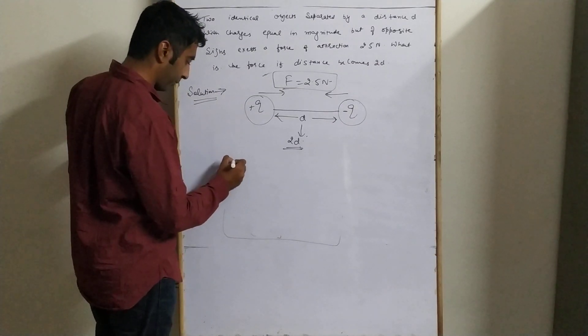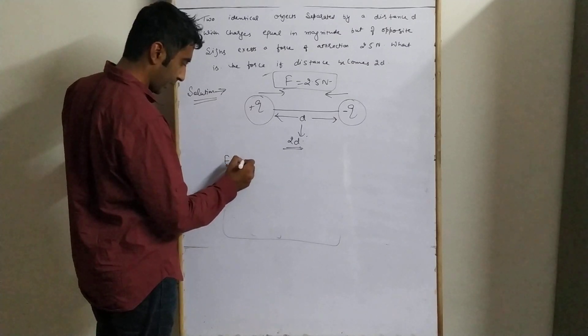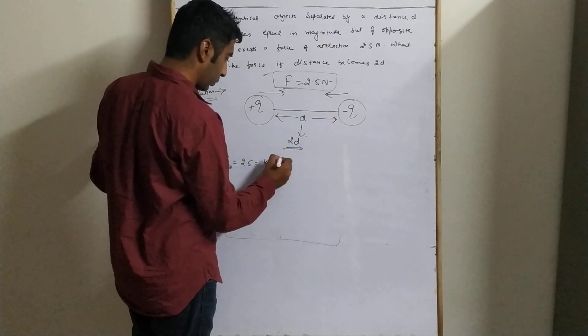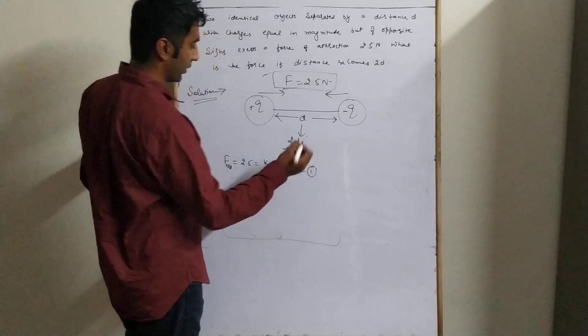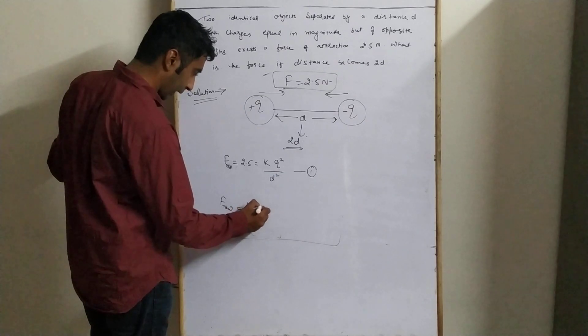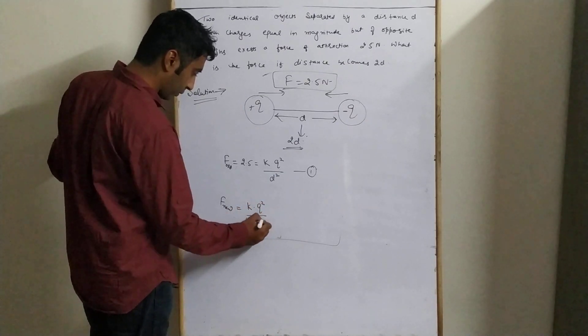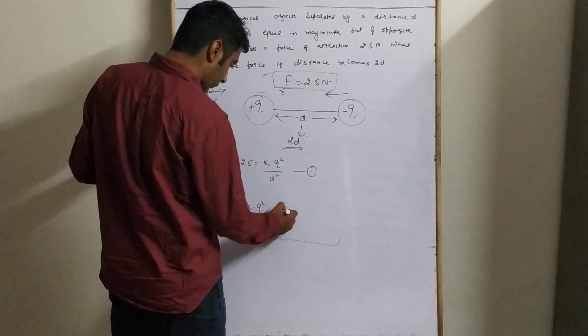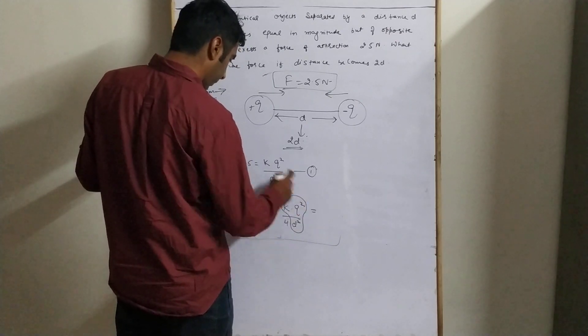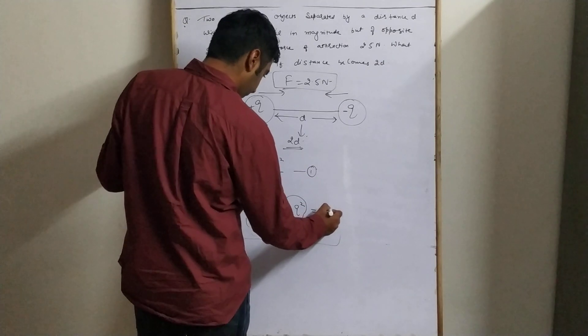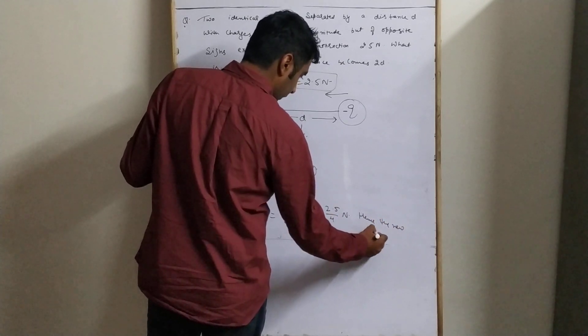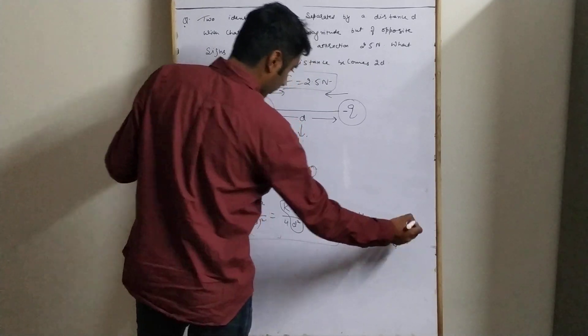Very easy. F_old = 2.5 = k q² / d². New force: F_new = k q² / (2d)² = k q² / 4d². Since k q² / d² equals 2.5 from the first equation, we get F_new = 2.5/4 Newton. Hence the new force is 2.5/4. Note it down.